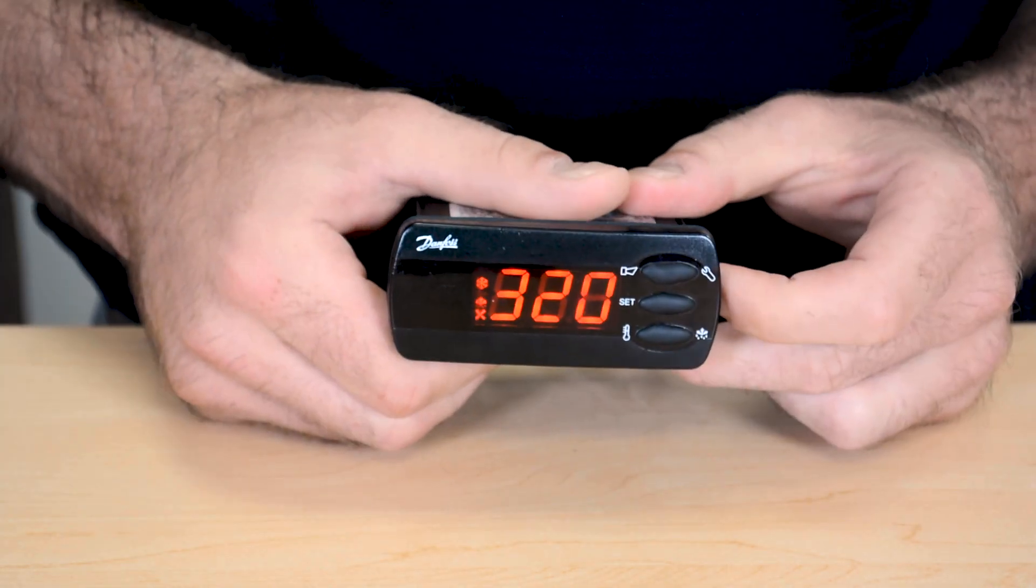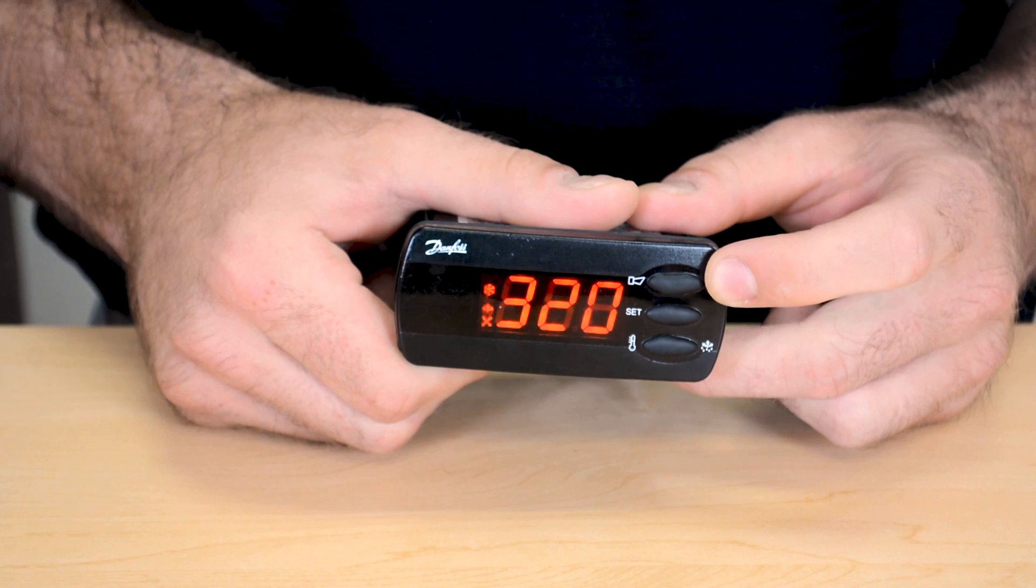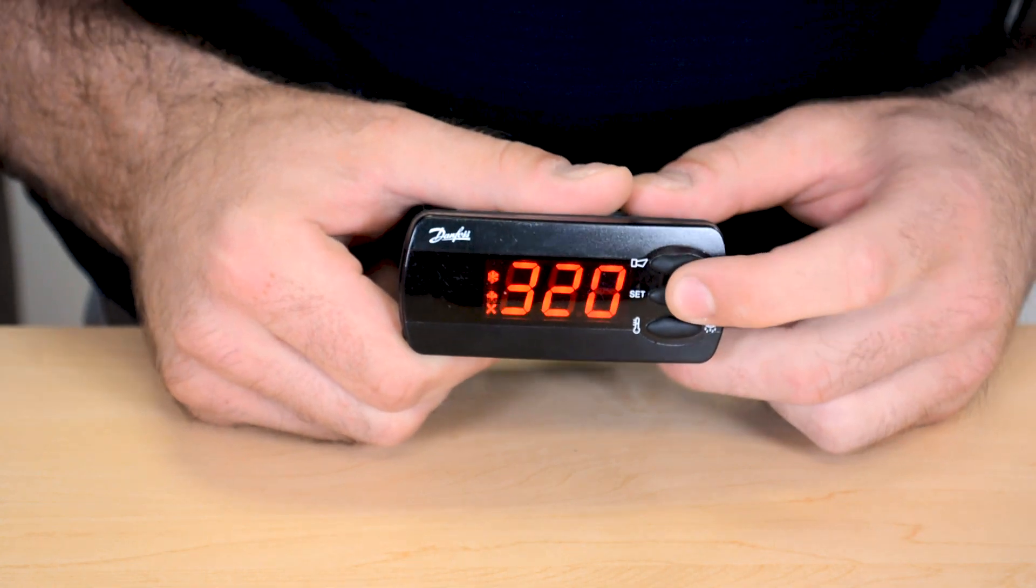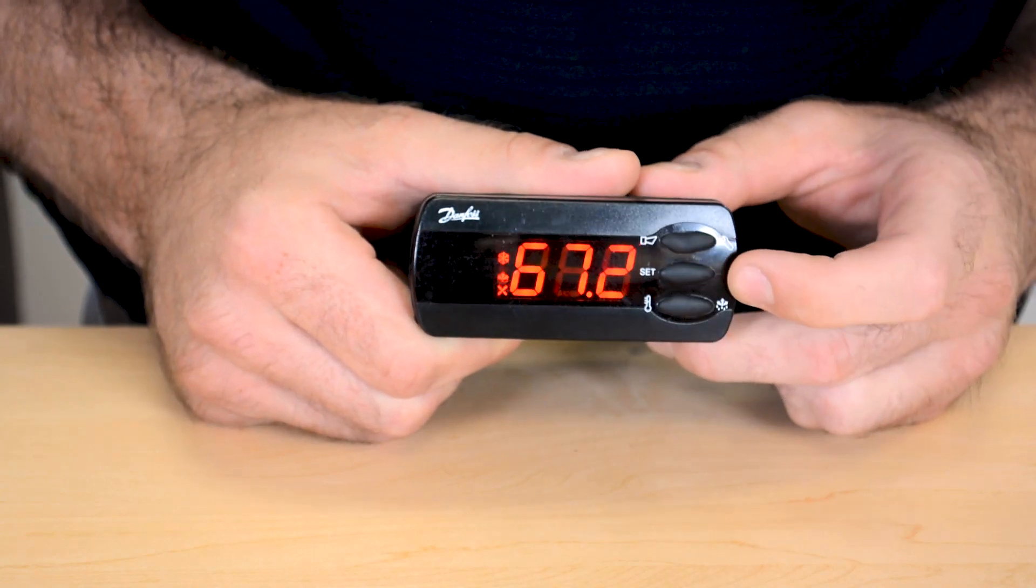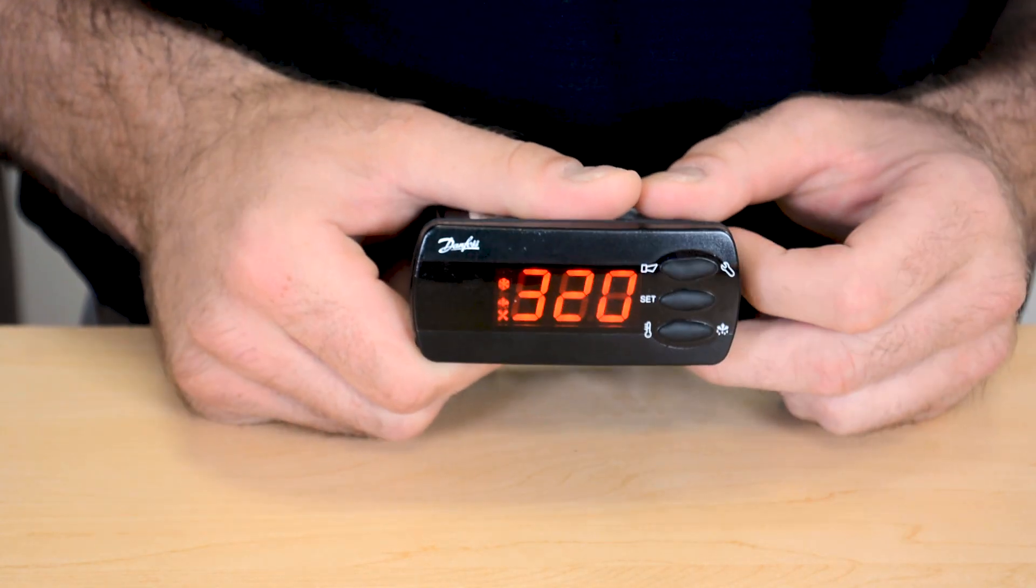For an overview of the button operation, a short press of the top button will take you to any alarm or status codes. A press of the middle button will take you into the set point which you can change with the top and bottom buttons and hit the middle button again to confirm.